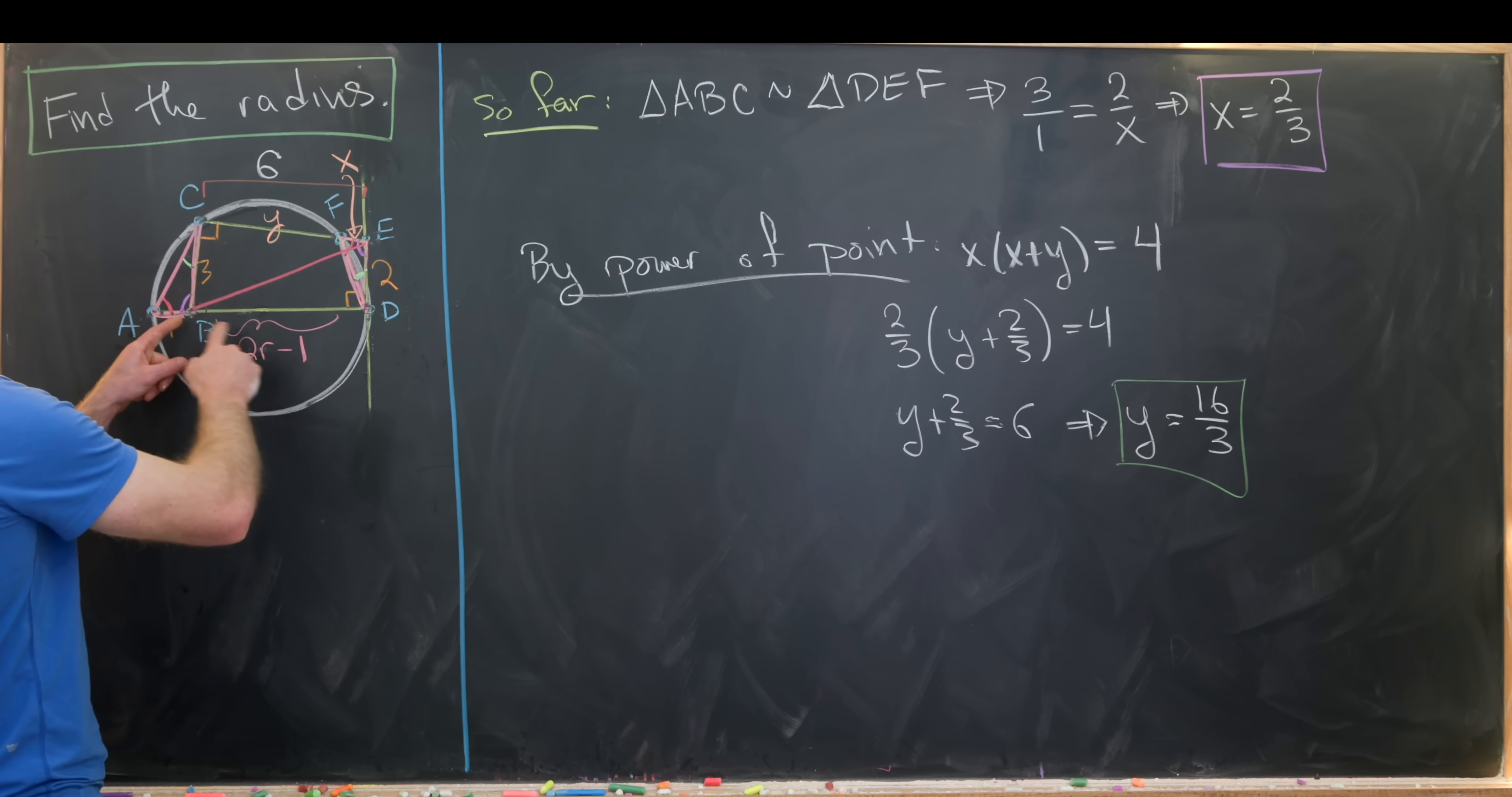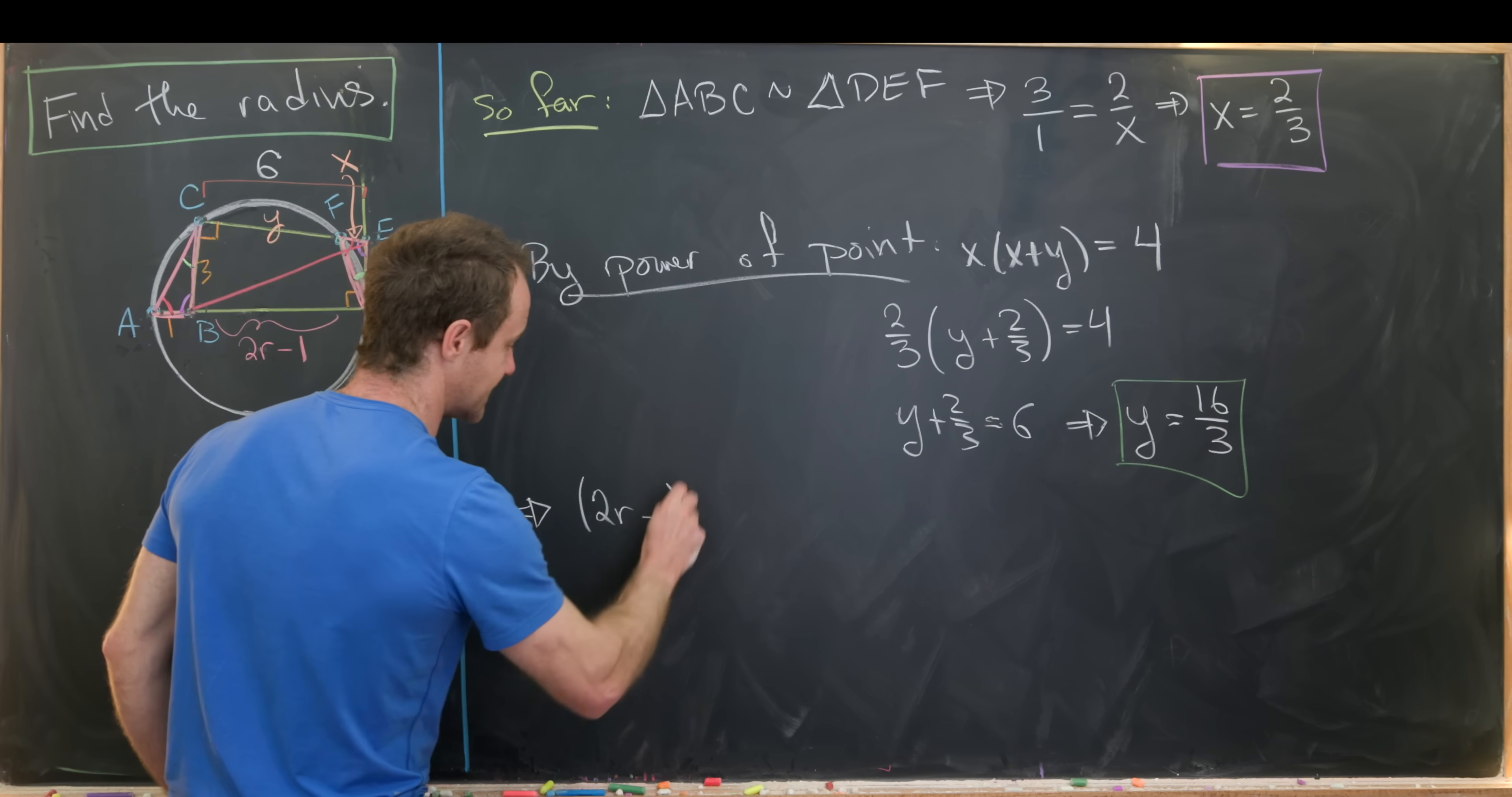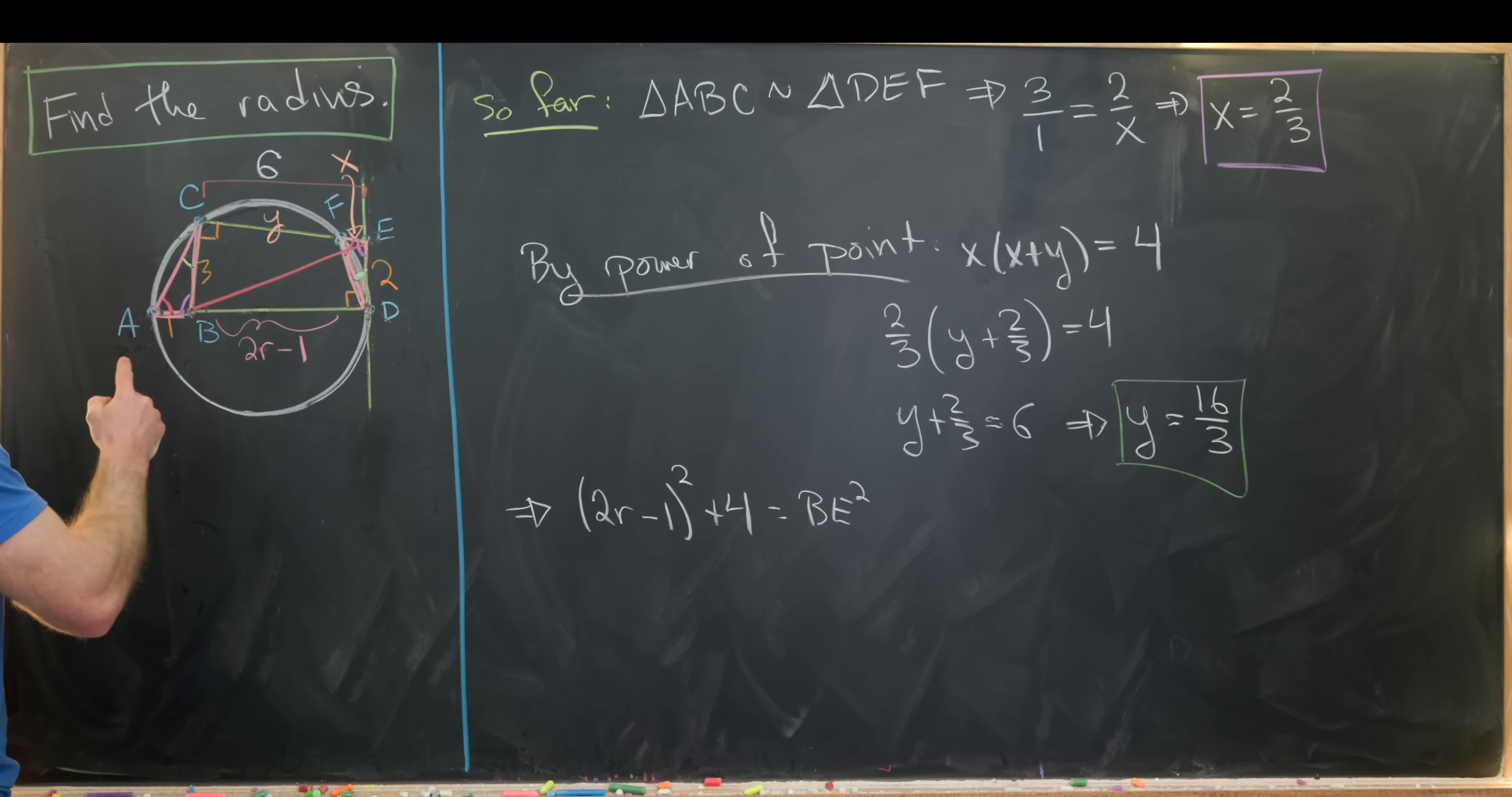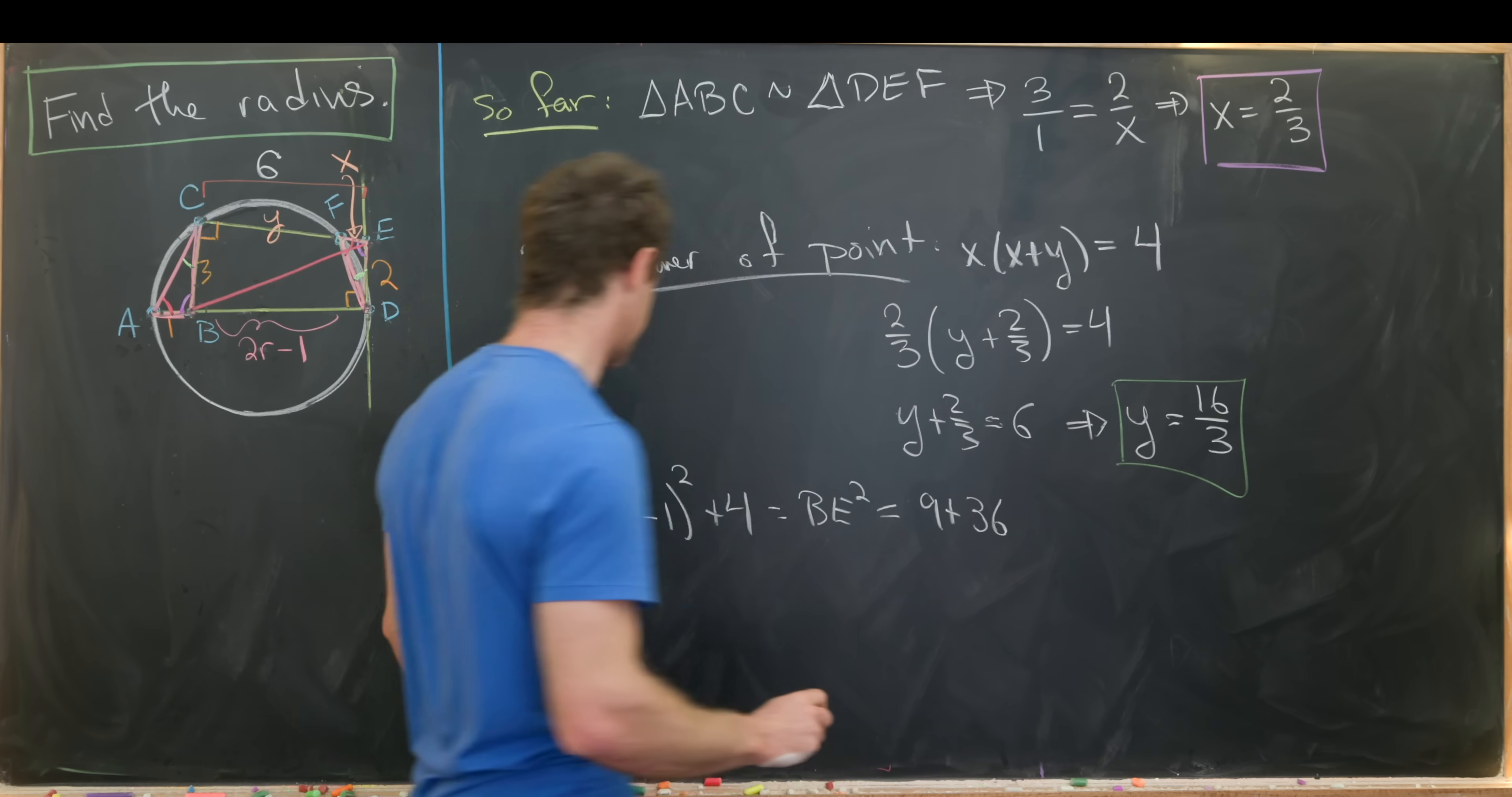So applying a Pythagorean theorem to BDE will give us the following equation. So we have 2R minus 1 squared plus 2 squared, which is 4, is equal to the length of line segment BE squared. And then applying the same Pythagorean theorem to triangle BCE will give us 3 squared plus 6 squared equals BE squared. So I'll just leave BE squared equals 3 squared, which is 9, plus 6 squared, which is 36.